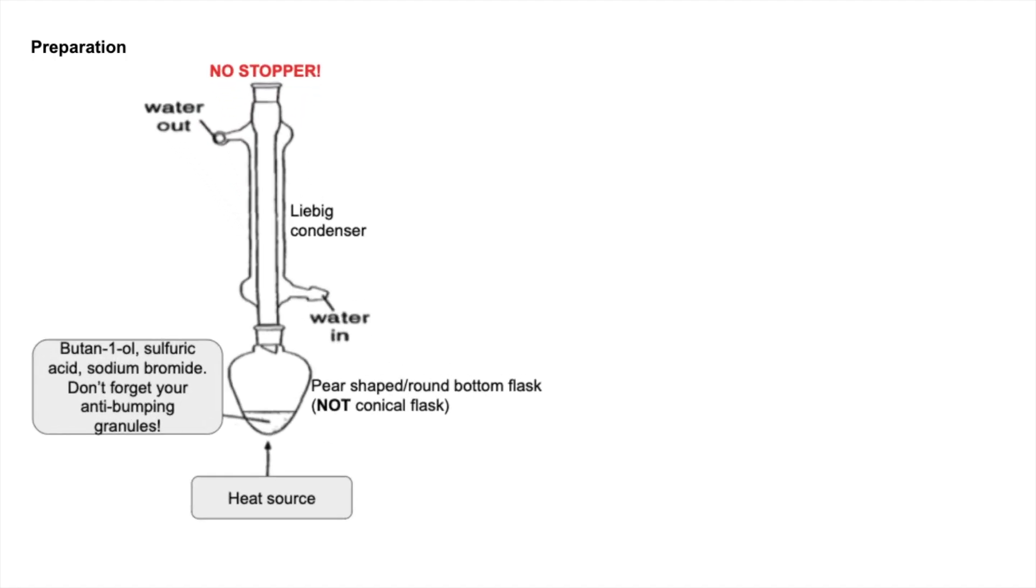The diagram would look something like that. I've just got this from Google Images, but as long as you get the key elements in there, you'd be fine. You need a heat source at the bottom, a pear-shaped flask or a round bottom flask for heating in, not a conical flask.